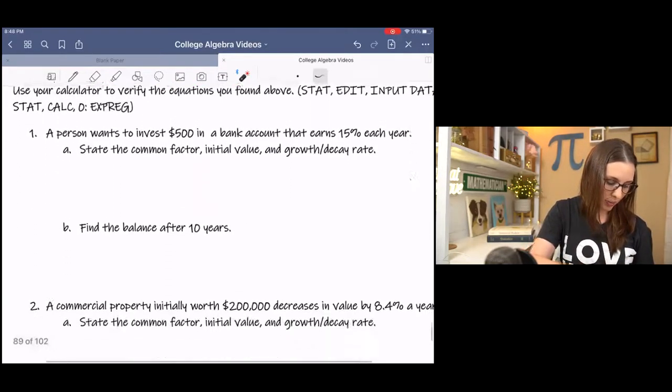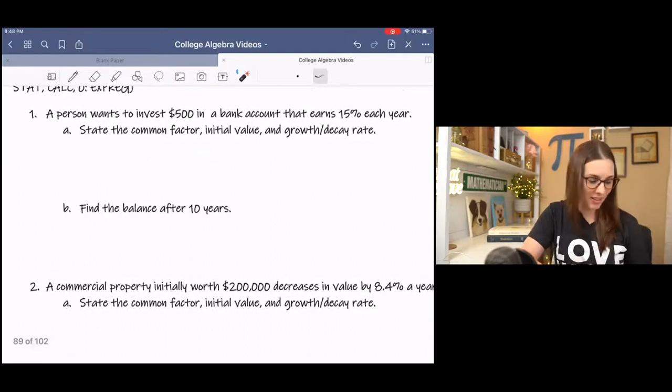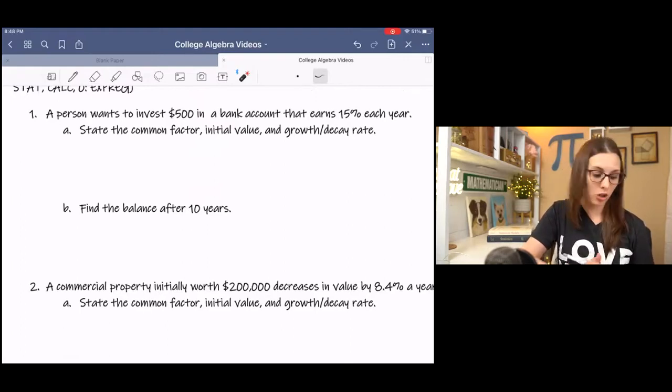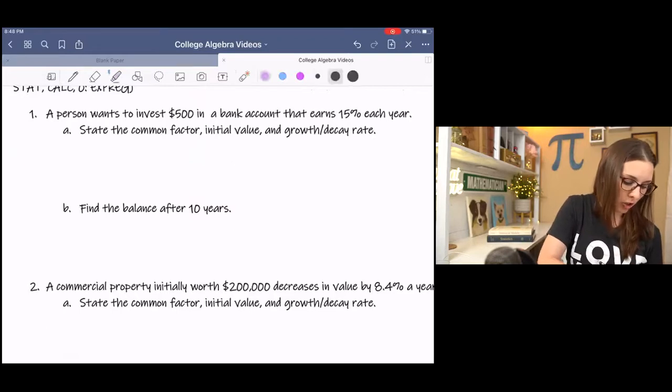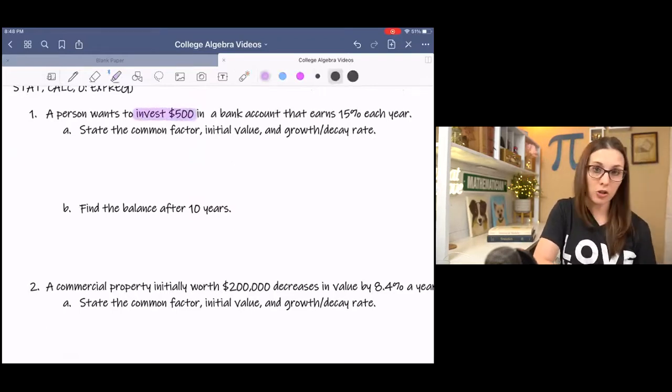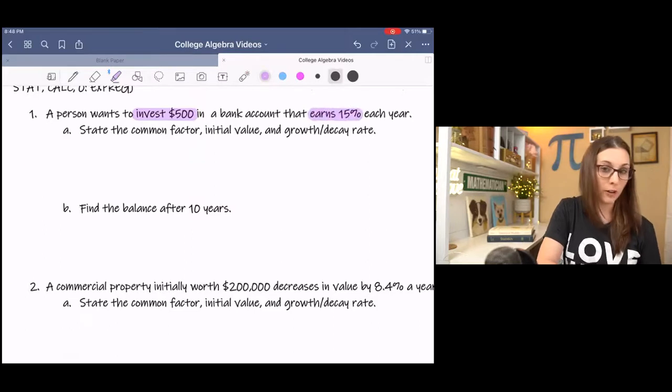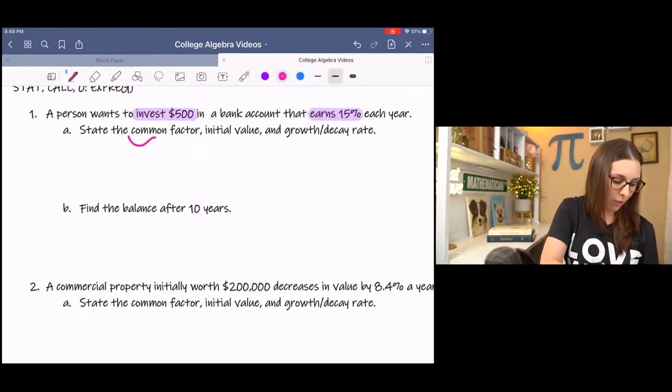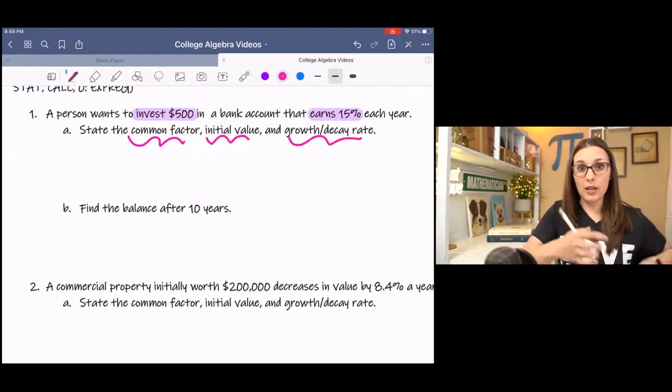Let's look at the next example. It's a word problem. I like these. A person wants to invest $500 in a bank account that earns 15% each year. There's some key information here. We're investing 500 and earning 15%. What would be the common factor, initial value, and growth or decay rate, depending?